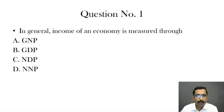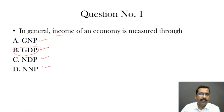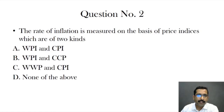The first question is: in general, income of an economy is measured through which measure? The options are GNP (Gross National Product), GDP (Gross Domestic Product), NDP (Net Domestic Product), and NNP (Net National Product). The answer is B — generally GDP is considered to measure the national income of any country.